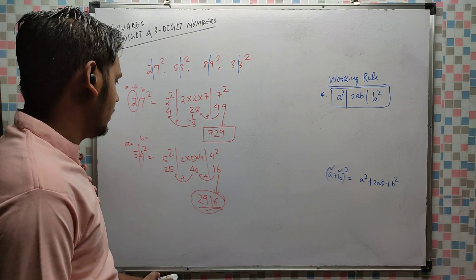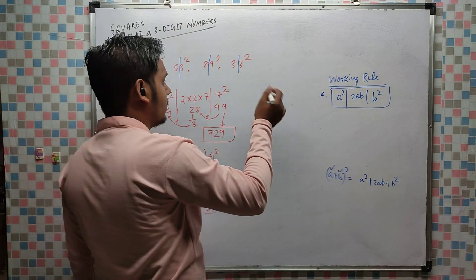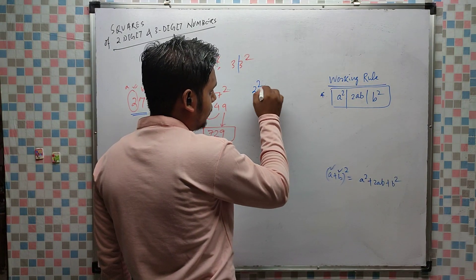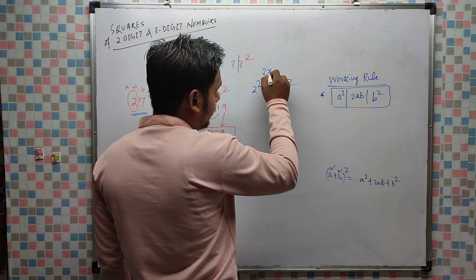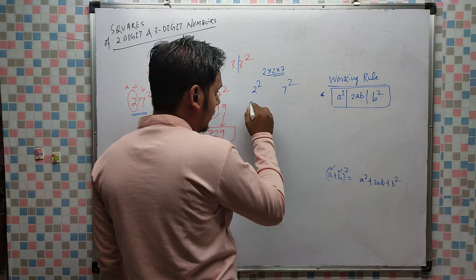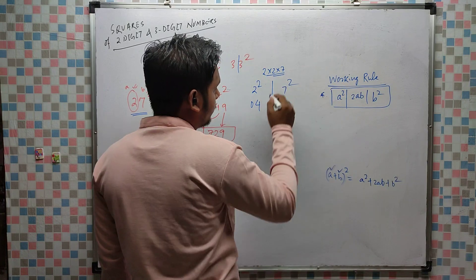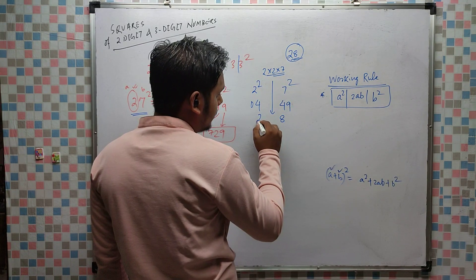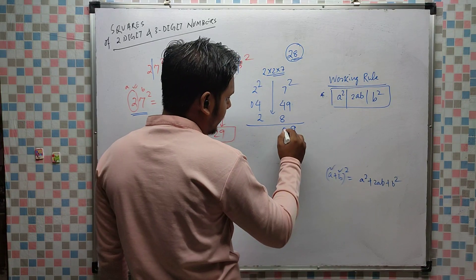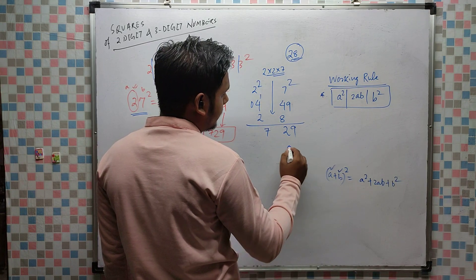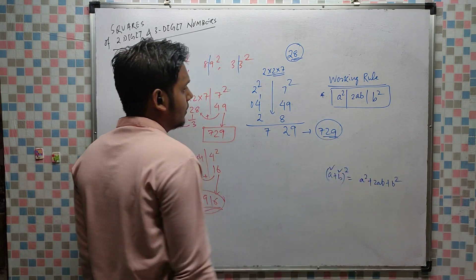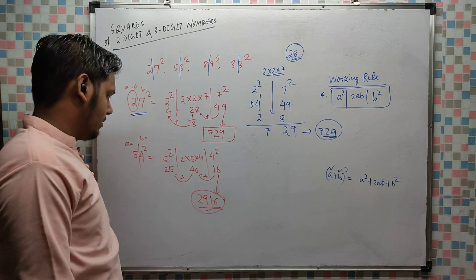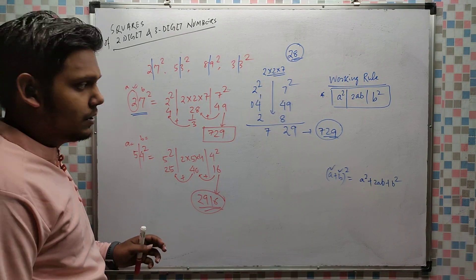There is also one more alternative method you can use. Each 2-digit number has two digits; you take the first digit squared and the last digit squared, and in the middle write 2 times the two digits. For 27: write 04, 49, and in the middle 28. Only the end digit goes in that position; the remaining digit carries over. So 9, 4+8=12, carry 1, then 4+3=7, giving 729 — same answer.